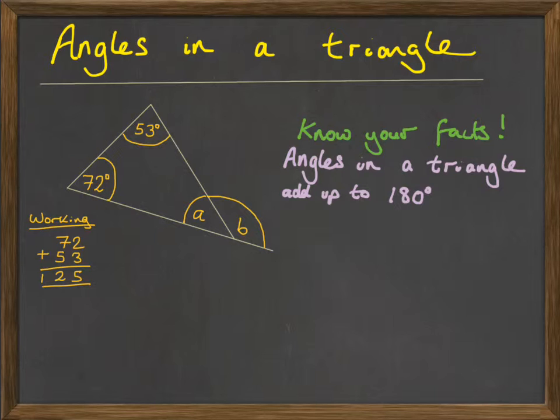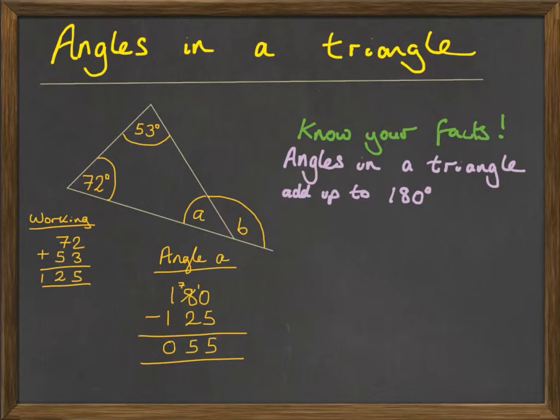We know the angles have to add up to 180 degrees, so a subtraction should allow us to find angle A. 180 minus 125 leaves us with 55, so angle A is 55 degrees.